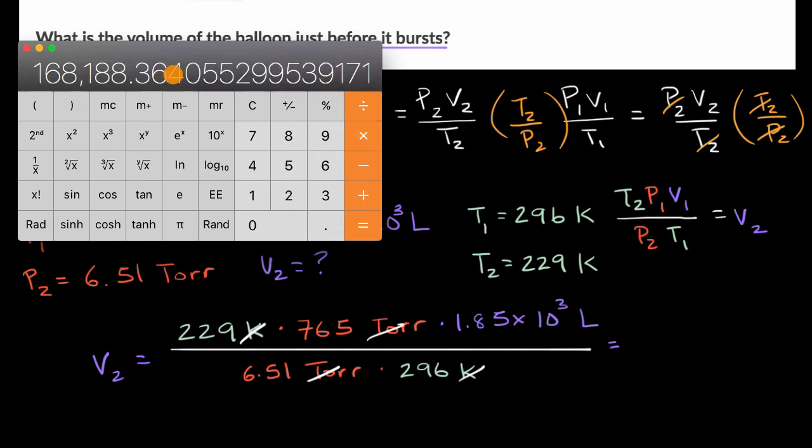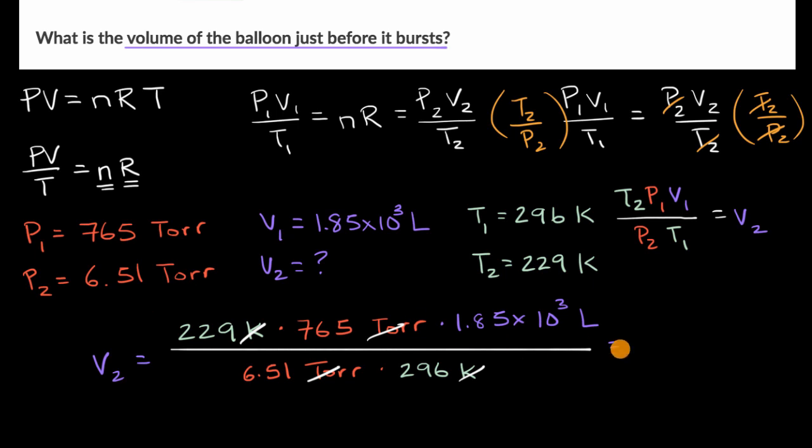So this is going to be equal to 229 times 765 times 1.85 times 10 to the third divided by 6.51 divided by 296 is equal to this business right over here. Let's see, we have three significant digits here, three significant digits here, three here, three here, and three there. So our answer is going to have three significant figures. So it's going to be, if we round, it's going to be 168,000. And so we could just write that as 168,000 liters. Or if we want to write that in scientific notation, we could write that as 1.68 times 10 to the one, two, three, four, five. So let me write it that way. So this is going to be equal to 1.68 times 10 to the fifth liters.